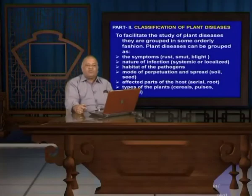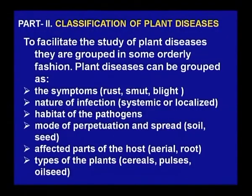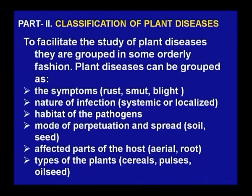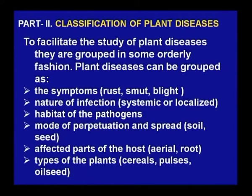Classification of plant diseases: to facilitate study, diseases are grouped in an orderly fashion. Plant diseases can be grouped on the basis of symptoms — like rust, smut, blight, etc.; nature of infection — systemic or localized; habitat of the pathogens; mode of perpetuation and spread — in soil or seed; affected parts of the host — aerial part or root; and types of plants — like cereals, pulses, oilseeds.